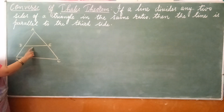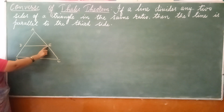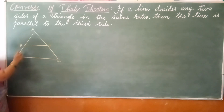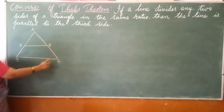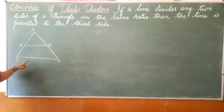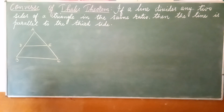If a line is drawn to intersect any two sides of a triangle in such a way that its ratios are equal — AD by DB and AE by EC — if those ratios are equal, then this line will be parallel to the third side of the triangle. This is the meaning of the converse of Thales theorem.